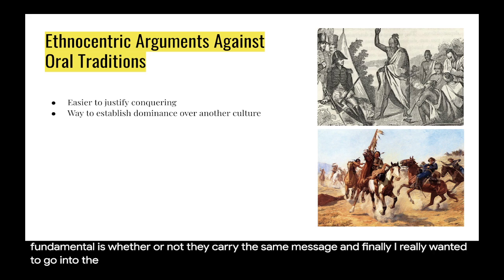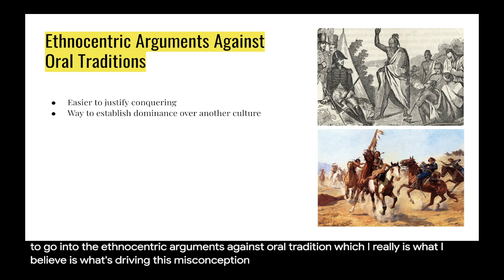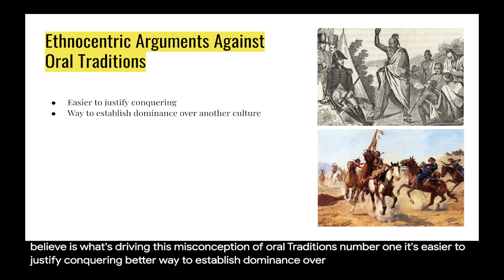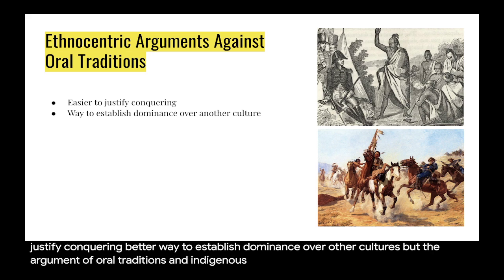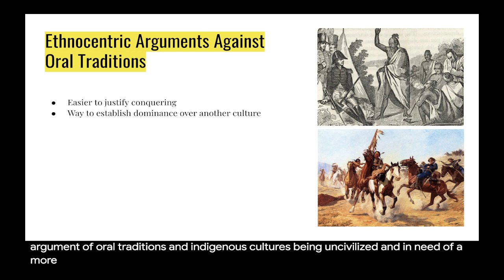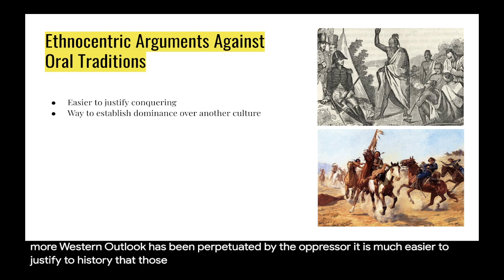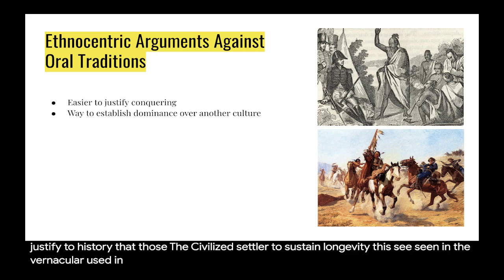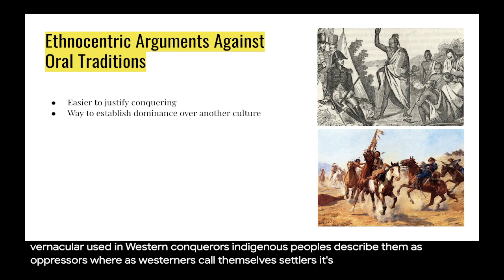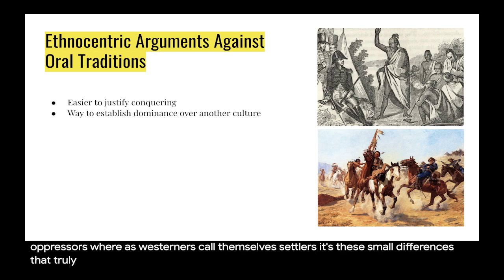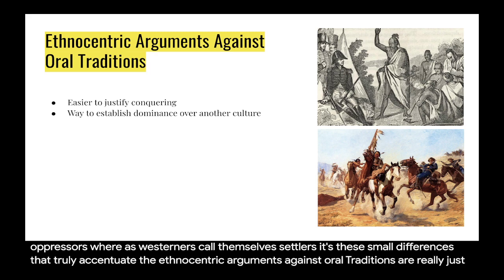The ethnocentric arguments against oral tradition are really what drive this misconception. First, it is easier to justify conquering and to establish dominance over other cultures. The argument that oral traditions and indigenous cultures are uncivilized and in need of a Western outlook has been perpetuated by the oppressor. It is much easier to justify historically that those conquered were in need of a civilized settler. This is seen in the language used — indigenous peoples describe Westerners as oppressors, whereas Westerners call themselves settlers. These small differences accentuate how ethnocentric arguments against oral traditions are rooted solely in oppression.